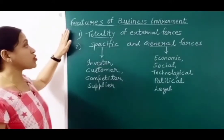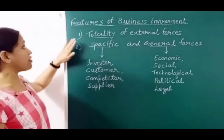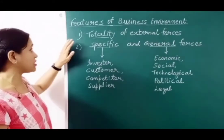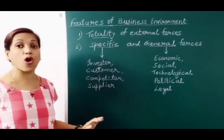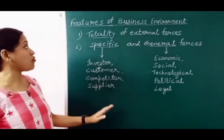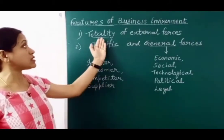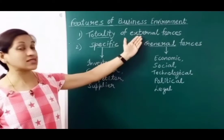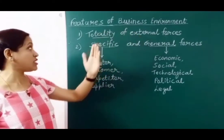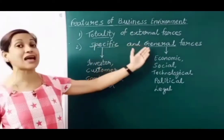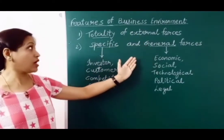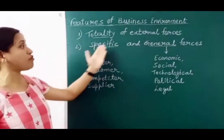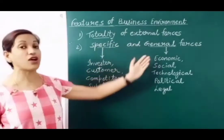Now we see the features of business environment. The first feature is totality of external forces. Total means sum or aggregate. So business environment is the sum or total of external forces, which include both specific forces and general forces.